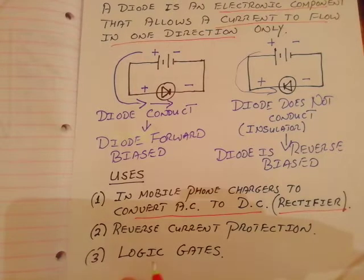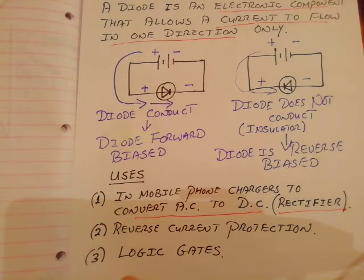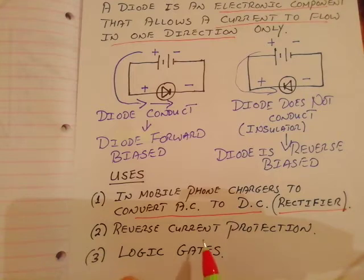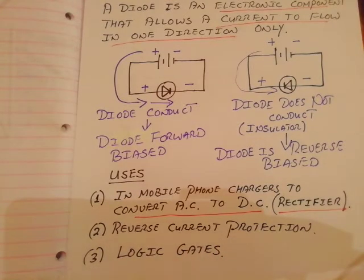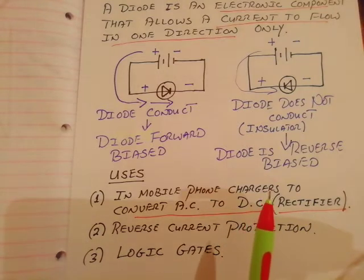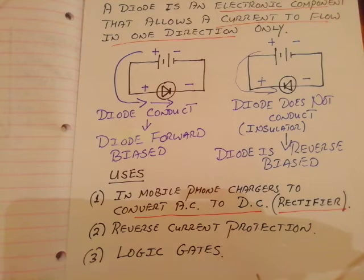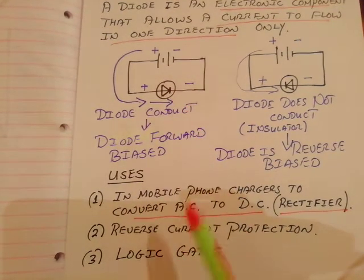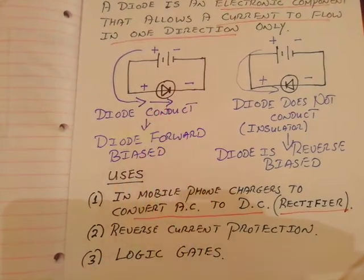Diodes can also be used as surge protectors in circuits. If you have a very expensive piece of electronic equipment and you plug it in to charge it, a diode can prevent the current going the wrong way inside the equipment, protecting it from damage. Diodes are also used in logic gates, which are the basis for all computing and computer circuits.